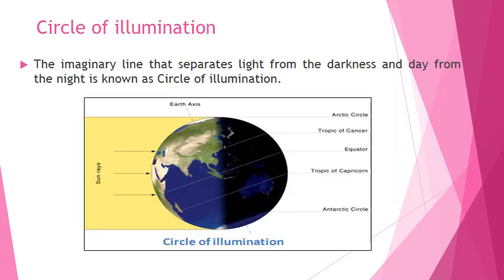Circle of illumination: The imaginary line that separates light from darkness and day from night is known as the circle of illumination.